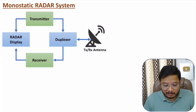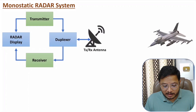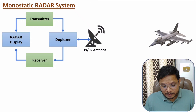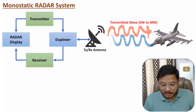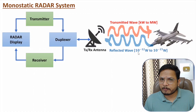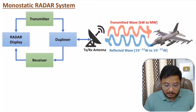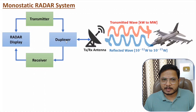That signal is given to the antenna which transmits high power. If an object appears, the signal is transmitted by this antenna — in terms of kilo volts to mega volts. The object will reflect the signal, and that reflected wave will have low power, in terms of 10 to the power minus 12 to 10 to the power minus 15. This received wave is given to the receiver circuit via the duplexer.